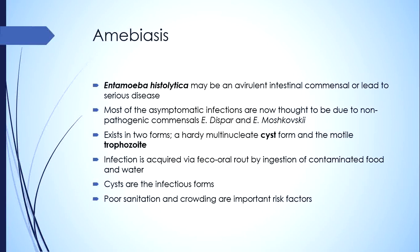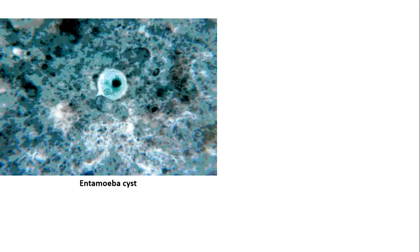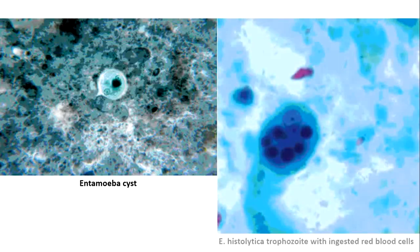That is why this disease is prevalent in the rural areas of underdeveloped countries. This is the picture of an Entamoeba cyst, and this is an active Entamoeba histolytica trophozoite with ingested red blood cells inside it, which indicates active infection.